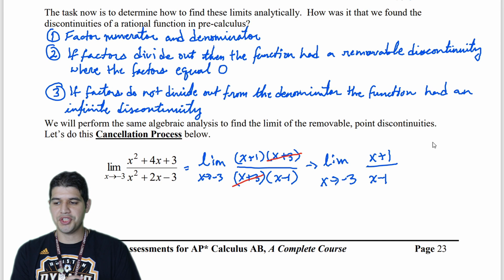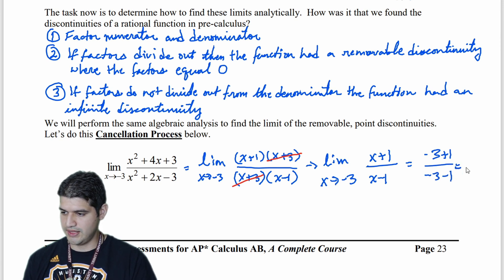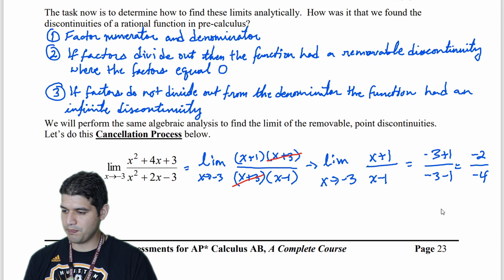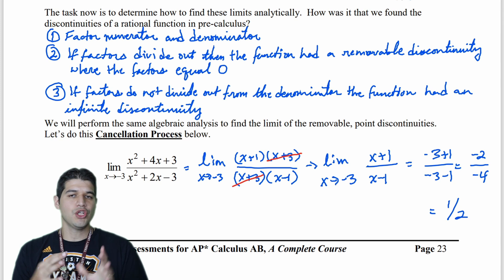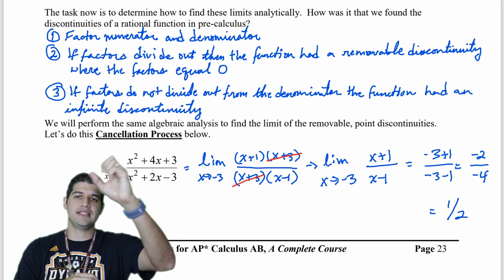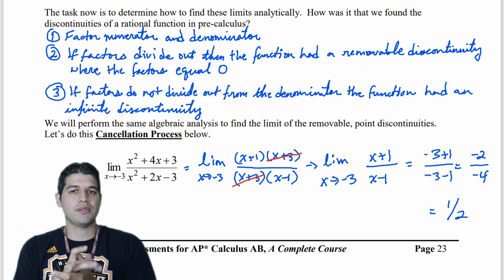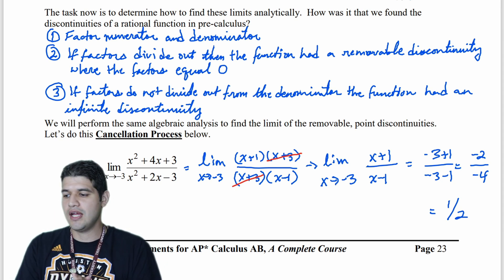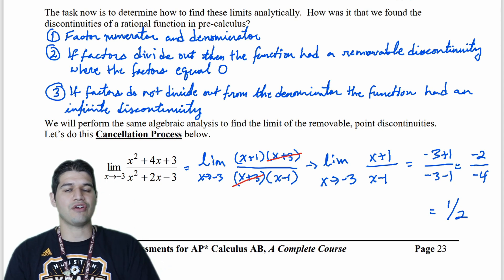Now let's try our substitution method at negative 3. We get negative 3 plus 1 over negative 3 minus 1, which gives negative 2 over negative 4, and that simplifies to be 1/2. If you substitute in negative 3 before simplifying, you would end up with the indeterminate form 0/0. But in this case, we were able to divide out those common factors and then substitute in, confirming analytically that the limit is 1/2.